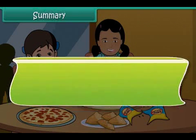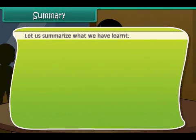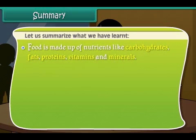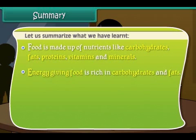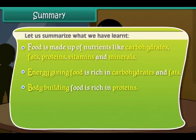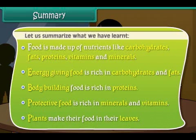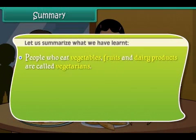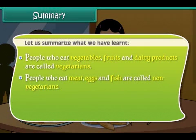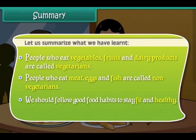Let us summarize what we have learned. Food is made up of nutrients like carbohydrates, fats, proteins, vitamins and minerals. Energy giving food is rich in carbohydrates and fats. Body building food is rich in proteins. Protective food is rich in minerals and vitamins. Plants make their food in their leaves. People who eat vegetables, fruits and dairy products are called vegetarians. People who eat meat, eggs and fish are called non-vegetarians. We should follow good food habits to stay fit and healthy.